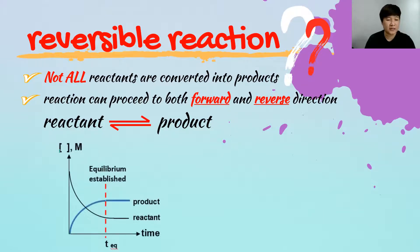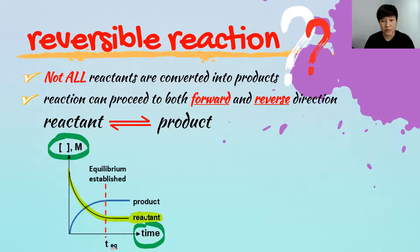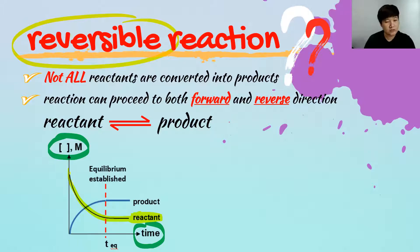Looking at the concentration versus time curve for a reversible reaction, you can see that the reactant will not become zero. It does not reach zero because it is a reversible reaction where the product can also change back to the reactant. The concentration of the reactant decreases along time as some reactant is converted to product, while the product starts at zero and increases — but the reactant never touches the x-axis.